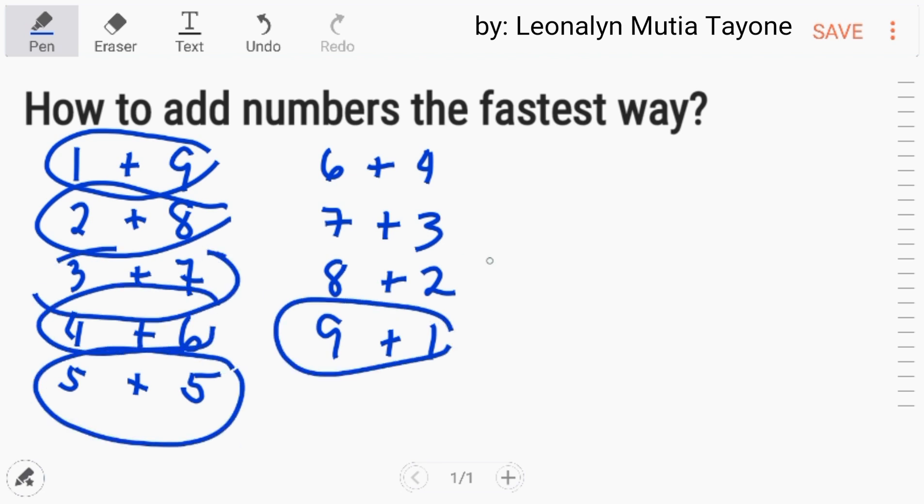Dapat i-master na to. Pag nakita mo yung 7, example, automatic, 3 ang pair nyan. Pag nakita mo si 2, automatic, 8 ang pair nyan. Now, let's do examples.